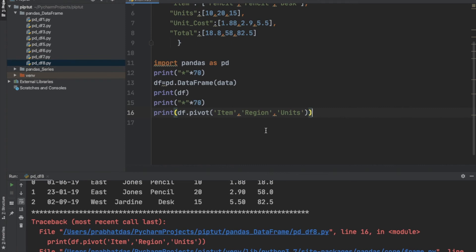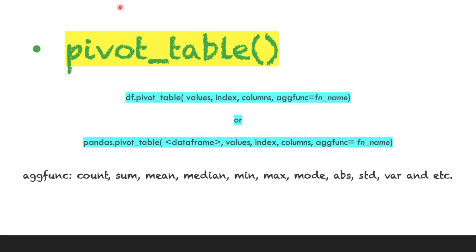Don't worry — the pivot_table function comes to the rescue. We can still perform pivoting for duplicate entries using pivot_table. Either of the following syntaxes can be used, but in this tutorial we will use the first syntax: the DataFrame object with dot notation and then pivot_table.